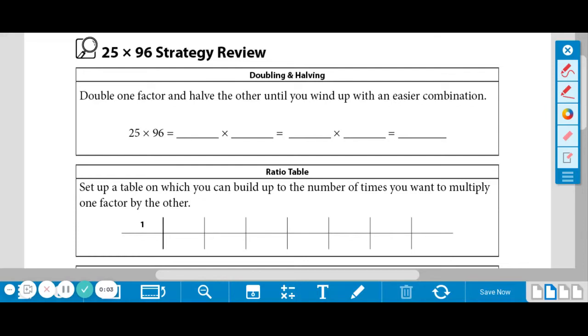Welcome back fifth graders. Today we are going to take some notes before starting our work. So on a blank piece of paper, whether it's in your math spiral or just a notebook paper, we want to title it 25 by 96, strategy review. So it's just the title of the page that you see up here and I'll put it in a box.